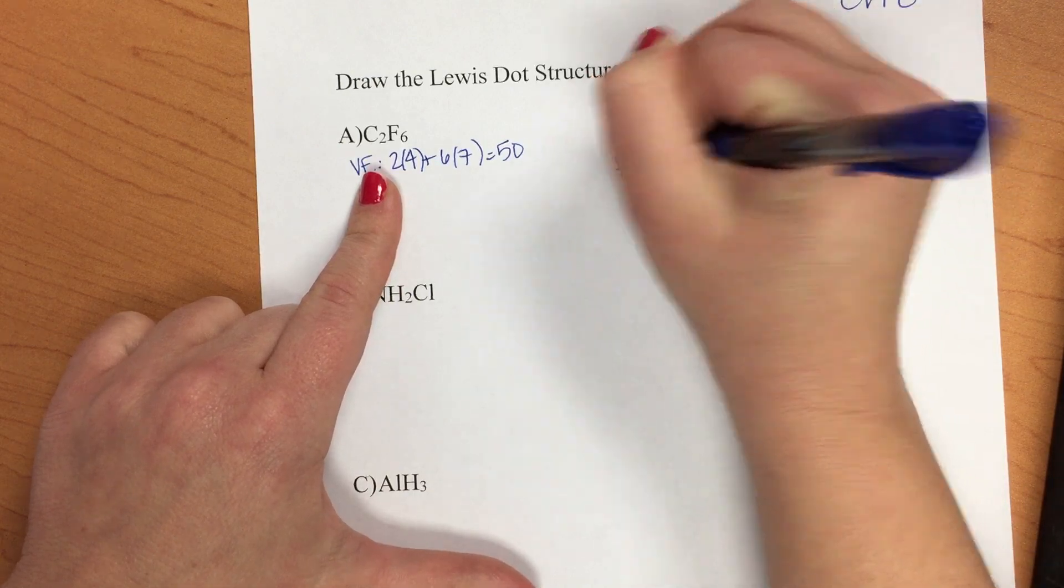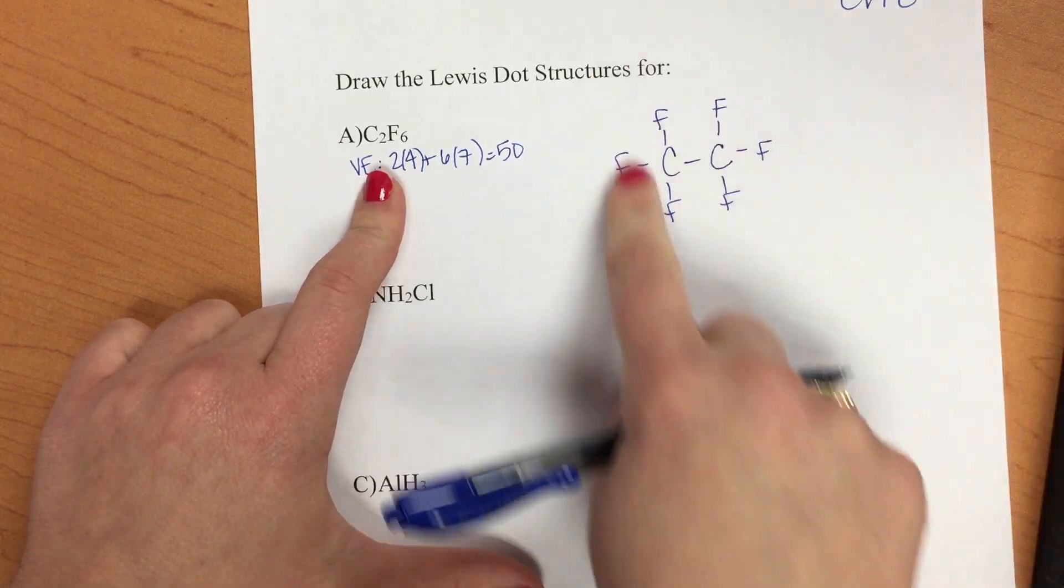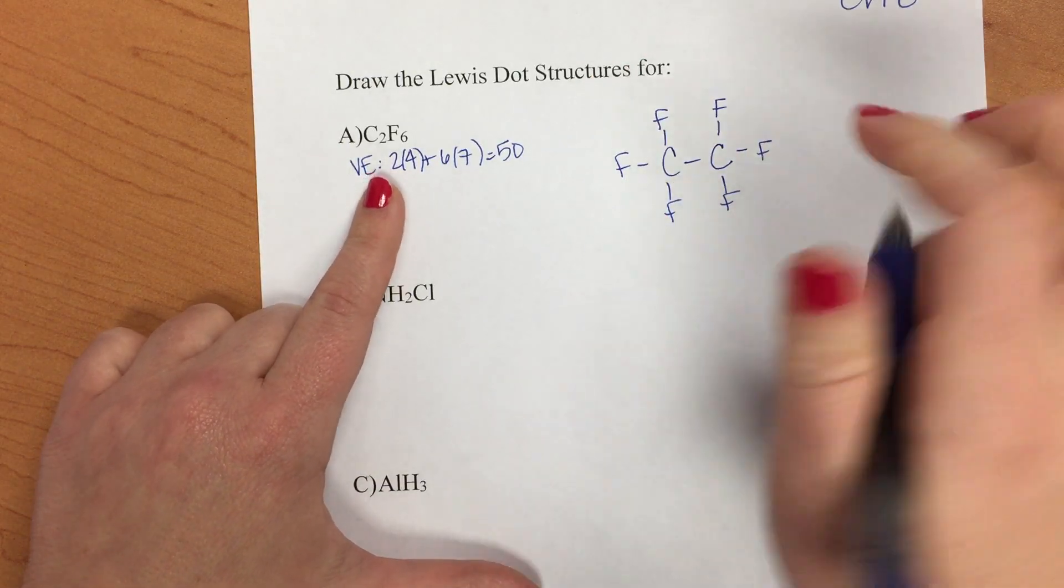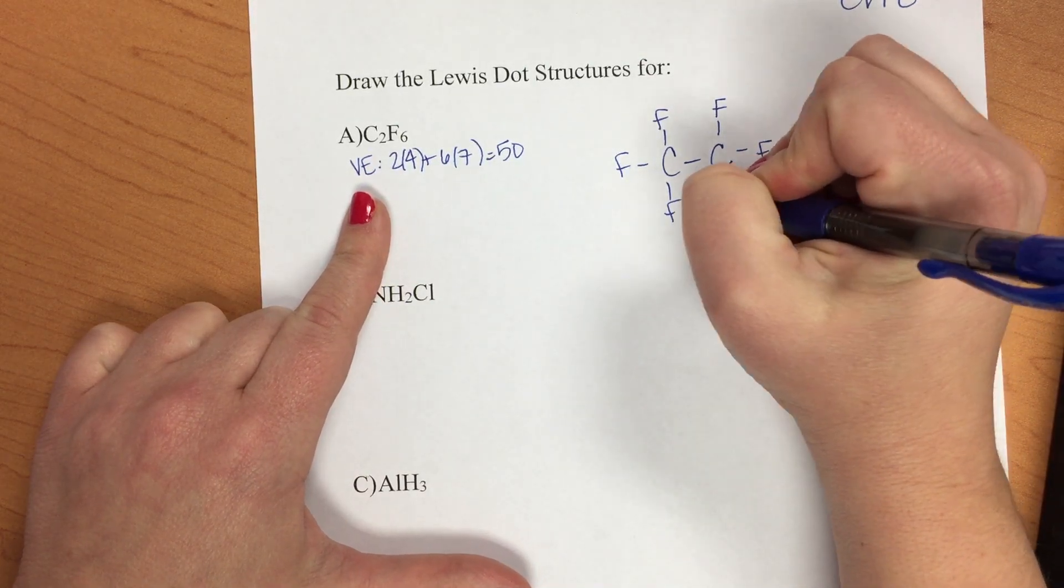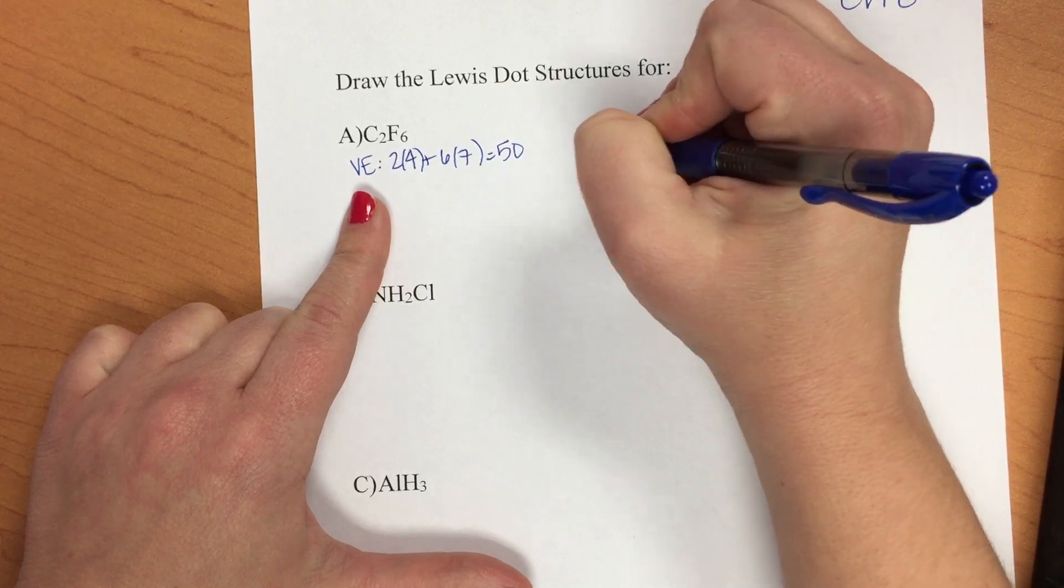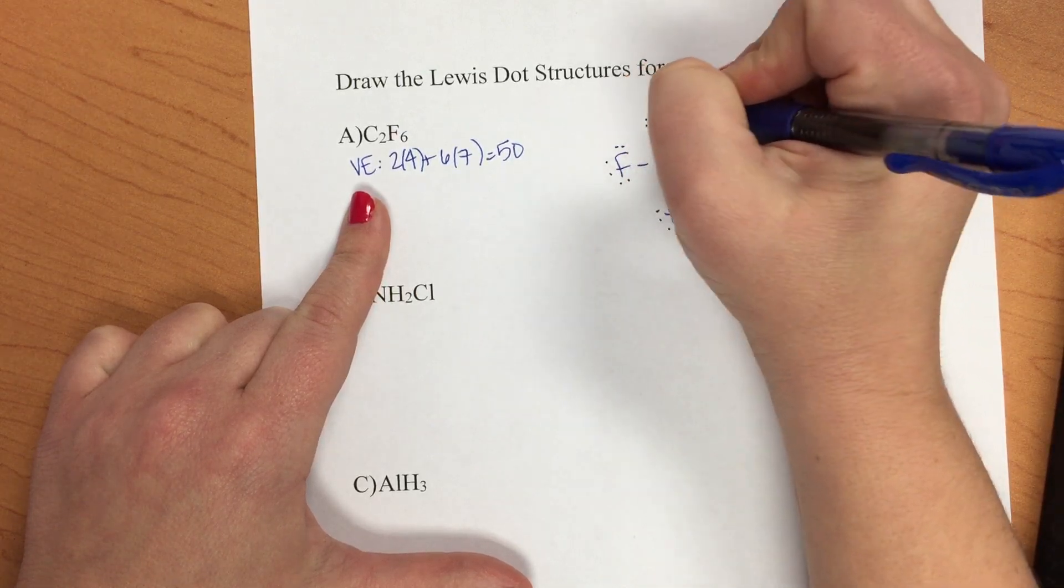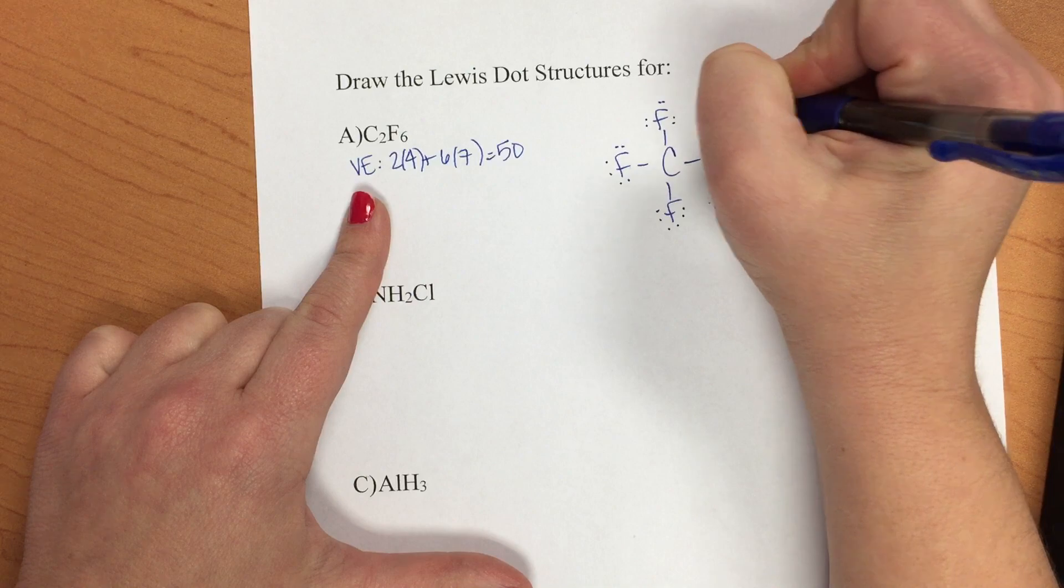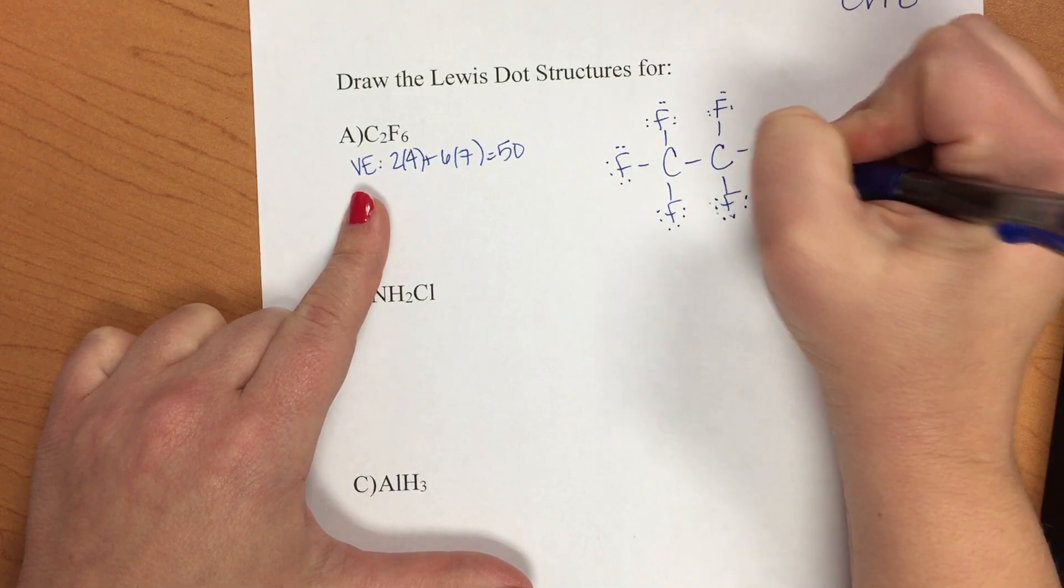So the guidelines for Lewis dot structures tell you that once you place all of these you want to add any lone pairs. So each fluorine gets two lone pairs. Oops, that one got lost.